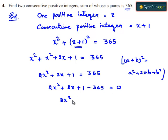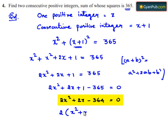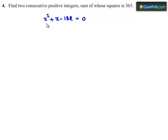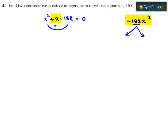This gives 2x squared plus 2x plus 1 minus 365 equals 0, which simplifies to 2x squared plus 2x minus 364 equals 0. Taking 2 as common, we get x squared plus x minus 182 equals 0. The product of the first and last terms is minus 182x squared, so we need two terms whose product is minus 182x squared and whose sum is plus x.